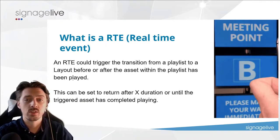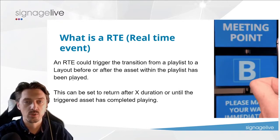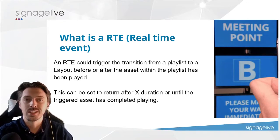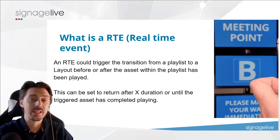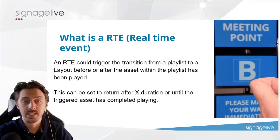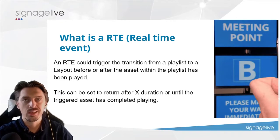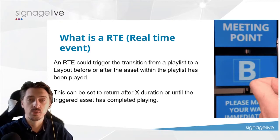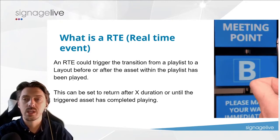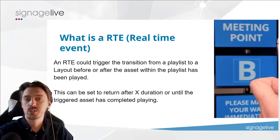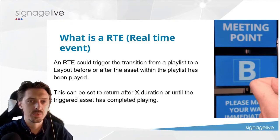An RTE can trigger the transition from a playlist to a layout, or from one layout to another — it fires when a specific piece of content is displayed. It can be triggered to run for a particular duration: say you've just shown an advert about beans and want to follow it with a full playlist about beans. That could run for five minutes and then return, or 30 seconds and then return, or play to the duration of that asset and then return to the original content.